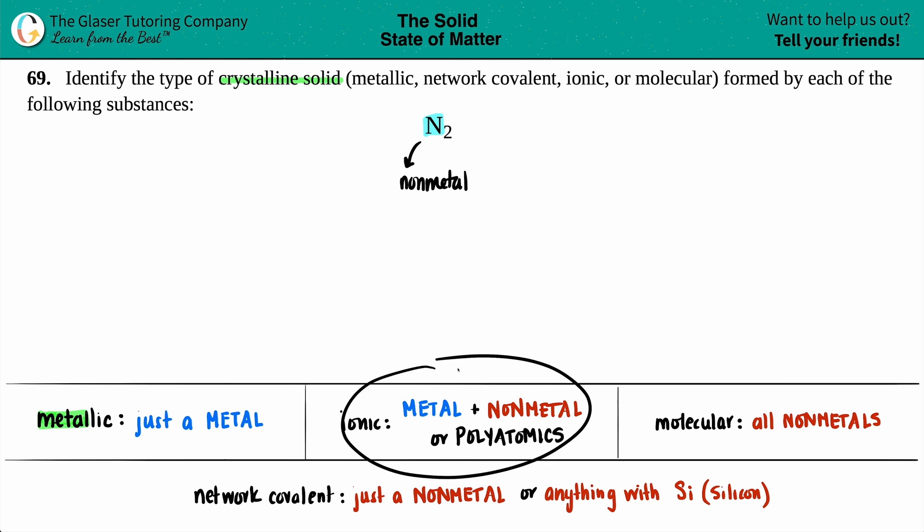So I move on to the next one. Ionic crystalline solids come from ionic compounds. And remember, an ionic compound is either a metal plus a nonmetal, or if you start seeing polyatomic ions. Once again, I have no metal here, and N2 is not a polyatomic, so can't possibly be ionic. Let's move to the next one.